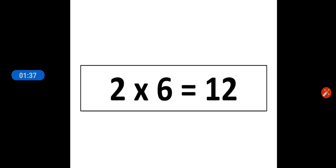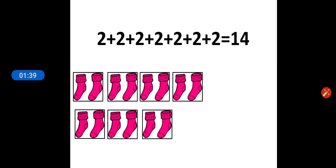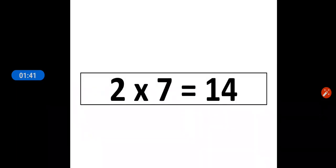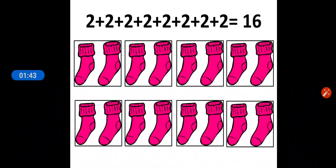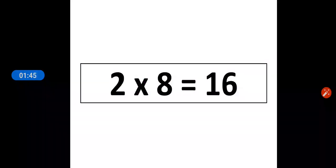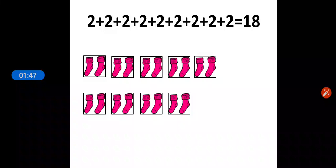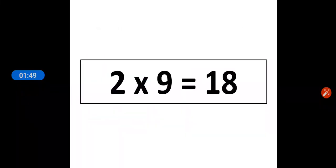For the seven pairs we will write as two sevens are fourteen. For eight pairs we will write as two eights are sixteen. For nine pairs we will write as two nines are eighteen, and for the ten pairs we will write as two tens are twenty.